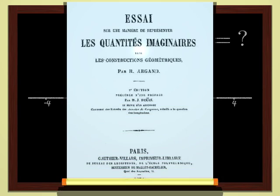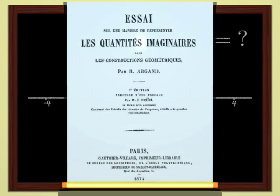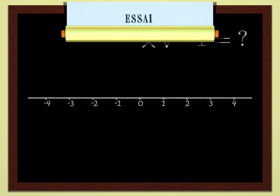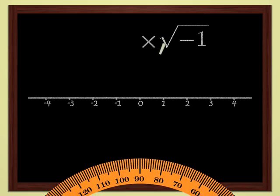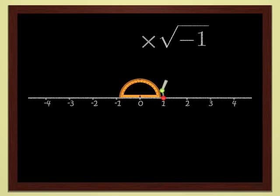At the beginning of the 19th century, Robert Argan had a really great idea. He said to himself, since multiplying by negative one is a 180 degree rotation, its square root is a rotation by one half of 180 degrees, 90 degrees. If I do two quarter turns one after another, I end up doing a half turn. The square of a quarter turn is a half turn, hence negative one. It's easy when you know how.